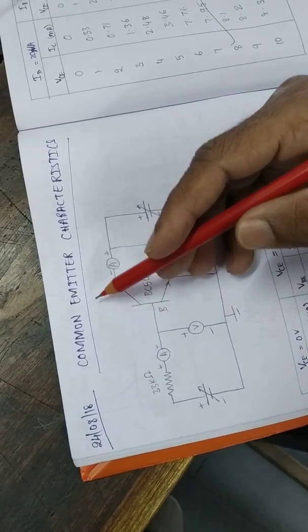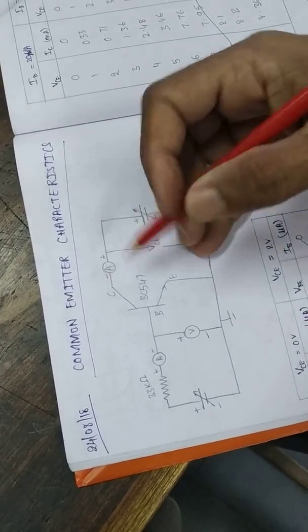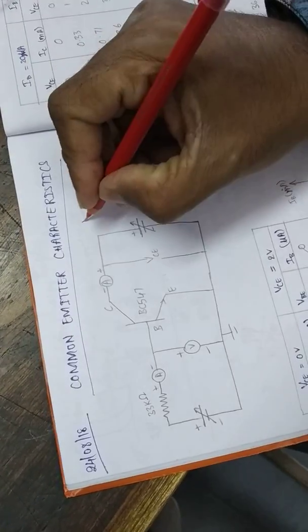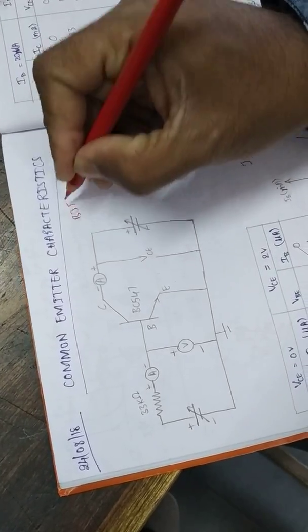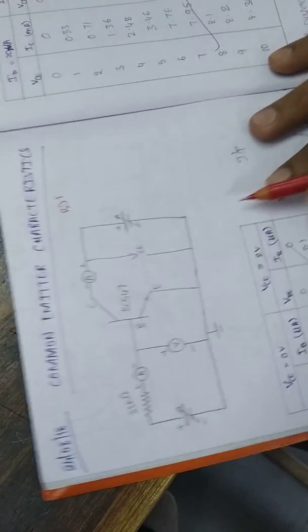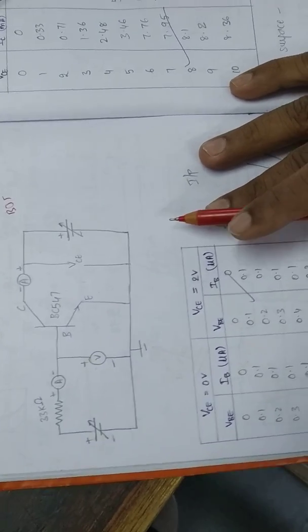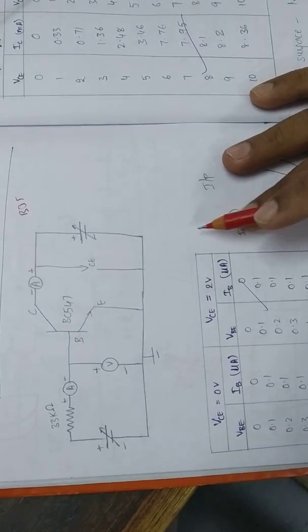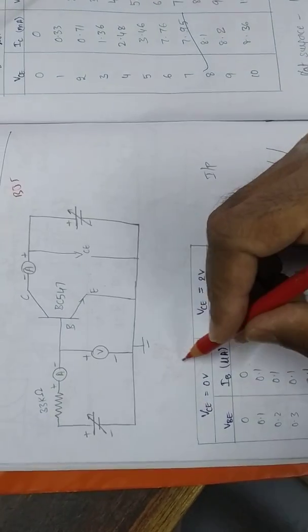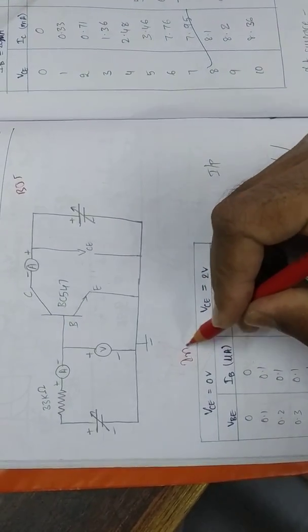We are going to deal with common emitter characteristics of a BJT — Bipolar Junction Transistor. The aim of this experiment is to plot input and output characteristics.